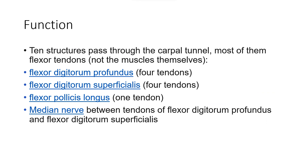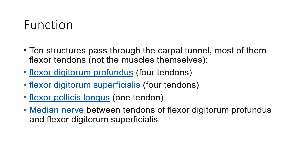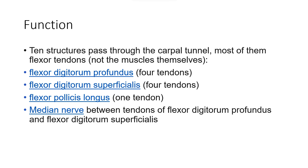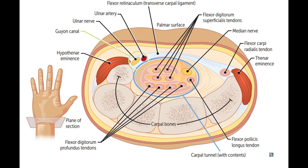Ten structures pass through the carpal tunnel, most of them flexor tendons, not the muscles themselves: flexor digitorum profundus — four tendons; flexor digitorum superficialis — four tendons; flexor pollicis longus — one tendon; and the median nerve, which runs between the tendons of flexor digitorum profundus and flexor digitorum superficialis.